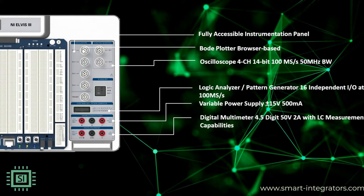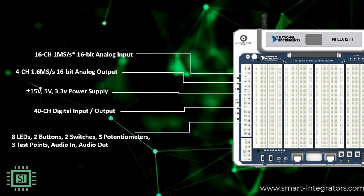NI Elvis 3 promotes teamwork and collaboration by providing Windows, Mac, and browser-based connectivity to seven benchtop-quality instruments: Bode plotter, four-analyzer, four-channel oscilloscope, a function generator, variable power supply, digital multimeter, and a pattern generator. The NI Elvis 3 also includes analog I/O, digital I/O, power supply, eight LEDs, two buttons, two switches, three potentiometers, three test-point audio in, and audio out.